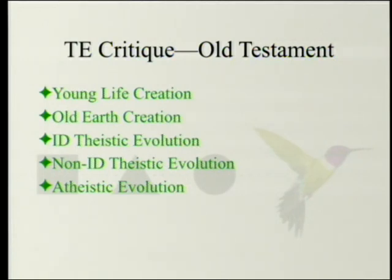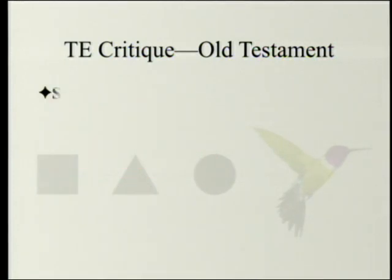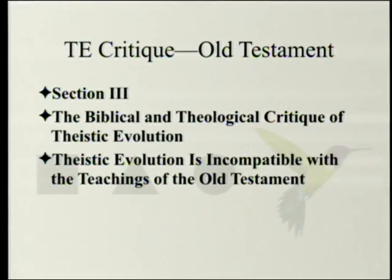This book is aimed primarily at non-intelligent design theistic evolution, not at atheistic evolution precisely. Atheistic evolution will take its lumps, but they are side-effect lumps — collateral damage. This chapter was written by John Currid, and it's in Section 3, the Biblical and Theological Critique of Theistic Evolution.